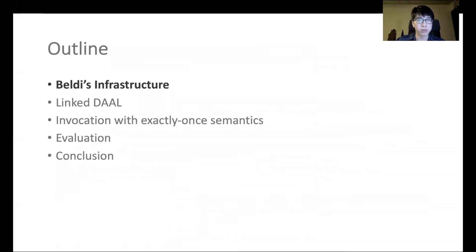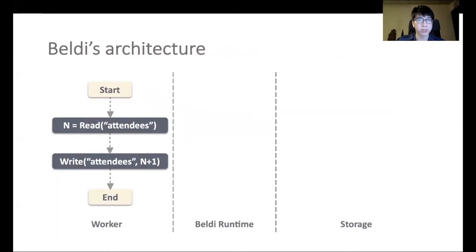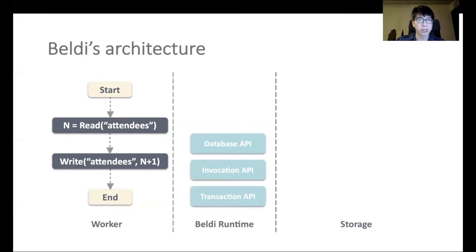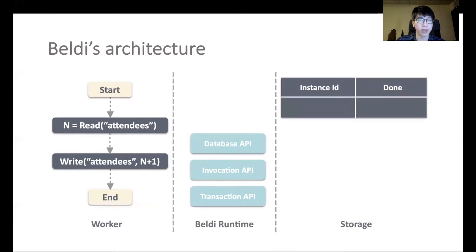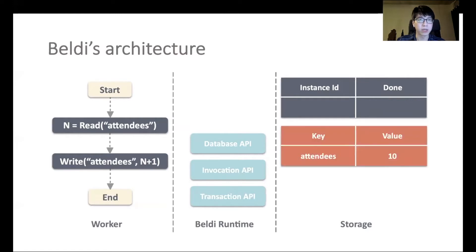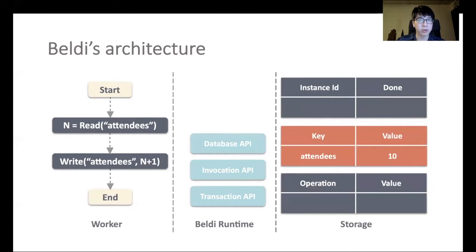In this talk, we will first introduce Beldi's infrastructure and two techniques. One is a new data structure that allows Beldi to work transparently on databases such as DynamoDB. The second is a new mechanism to support exactly-once semantics for function invocations, followed by evaluation and conclusion. Let me show you Beldi's architecture with our previous example. Beldi acts as a shim layer between the workers and the storage system. Beldi libraries expose three APIs to the client: an API to read and write from the database, an API for one serverless function to invoke another, and an API to define transactions across multiple serverless functions.